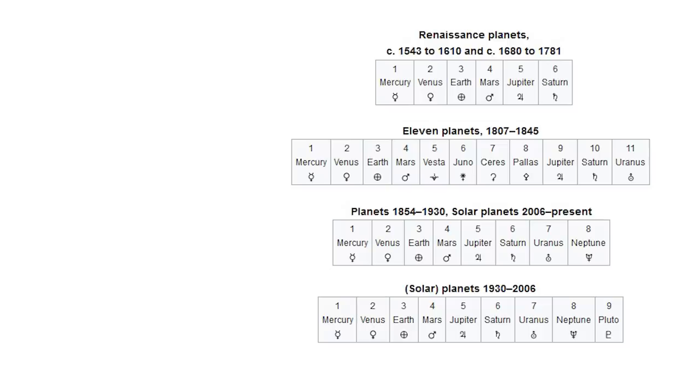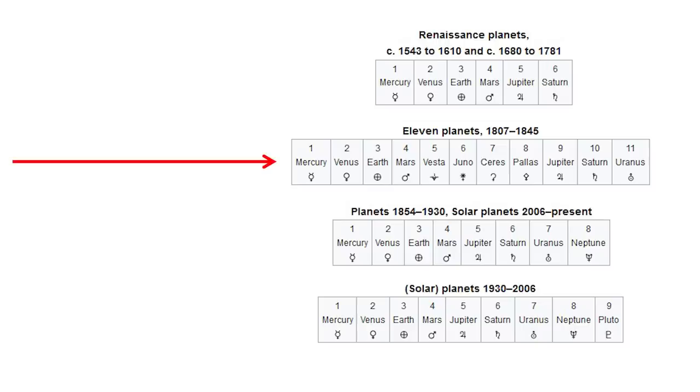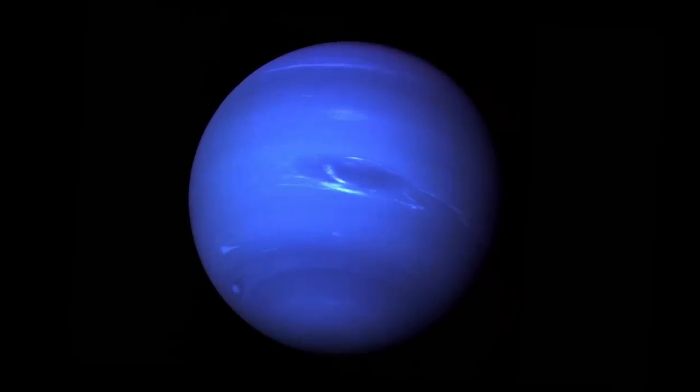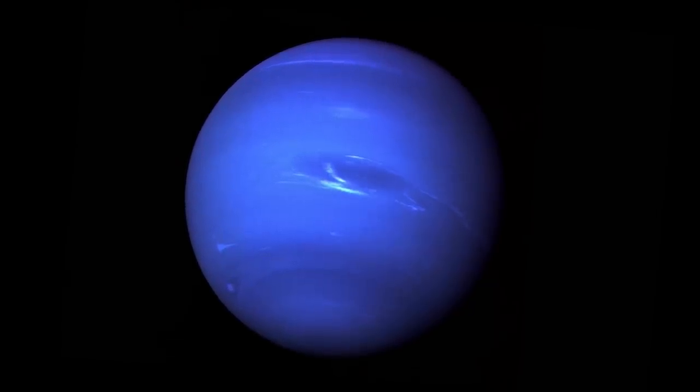In science textbooks in the early 1800s, they were all listed as planets. In the middle of the 1800s, Neptune was discovered, and within just a few decades we had quite a list of planets on our hands.